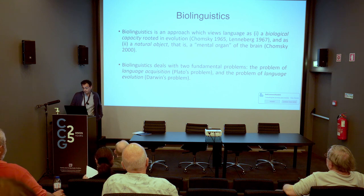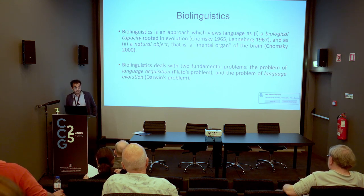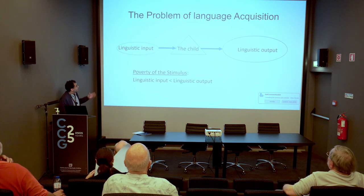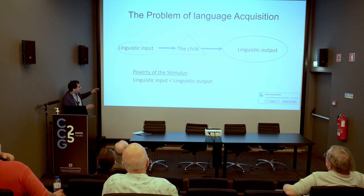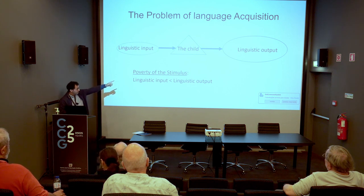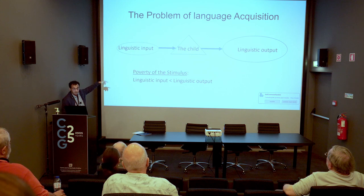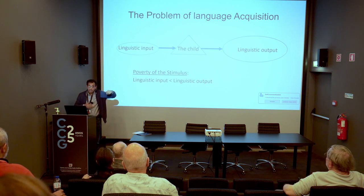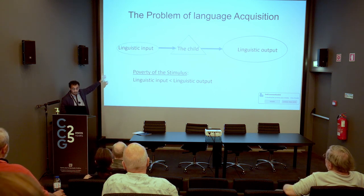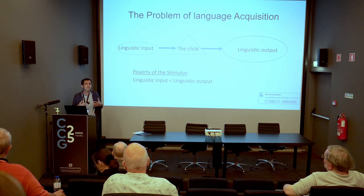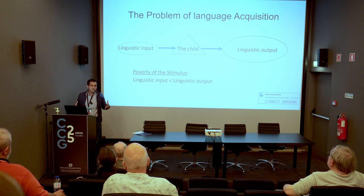The first is the problem of language acquisition, known in the literature as Plato's problem, and the second is the problem of language evolution, known as Darwin's problem. As to language acquisition, you have the linguistic input, then the brain of the child, and then a linguistic output. The circle there is bigger, to give the idea that the child's linguistic output is greater than his linguistic input — that is, the primary linguistic data, his linguistic environment.